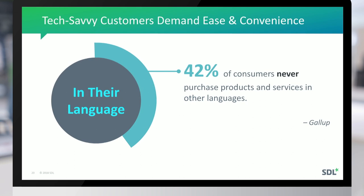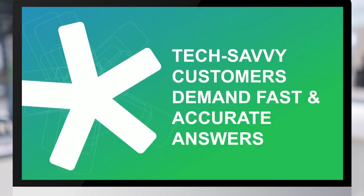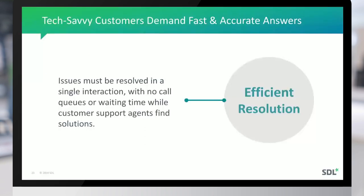The customer is global today, and many customers will not even consider products that don't provide information in their language of choice. A Gallup poll suggests that 42% of customers will never look at a product that doesn't provide information in their language of choice. A recent Common Sense Advisory survey pointed out that 74% of customers are more likely to repurchase if their after-sales support — especially for major issues — is provided in their language. This has become a requirement: to be able to provide global support quickly, accurately, and in the language of the customer.